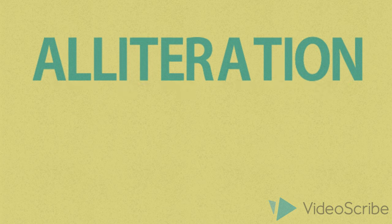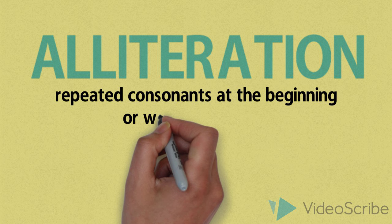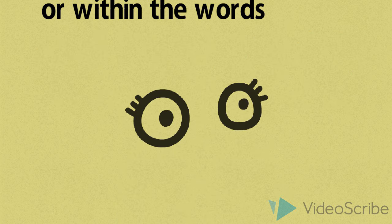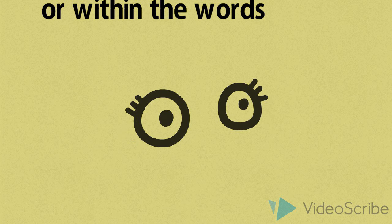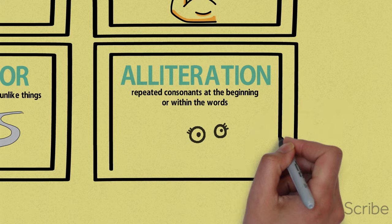Alliteration. Alliteration is repeating consonant sounds that occur at the beginning of words or within the words. An example would be she was wide-eyed and wondering while she waited for Walter to awaken.